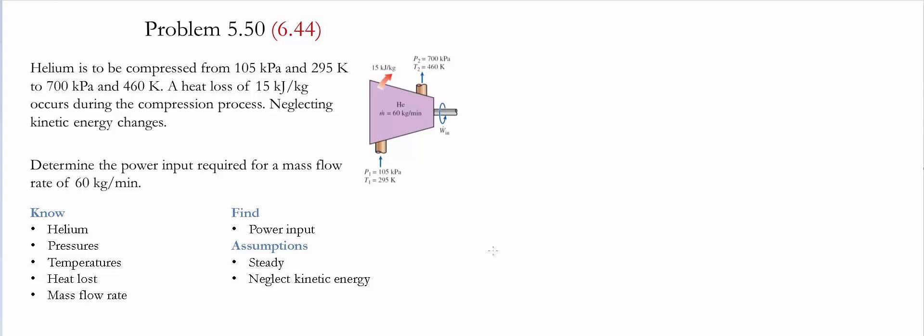Problem 5.50 or 6.44 for the given textbooks. For details please see the description below. Helium is to be compressed from 105 kPa and 295 K to 700 kPa and 460 K, a heat loss of 15 kJ per kg occurs during this compression process. Neglecting the kinetic energy changes, determine the power input required for a mass flow rate of 60 kg per minute.